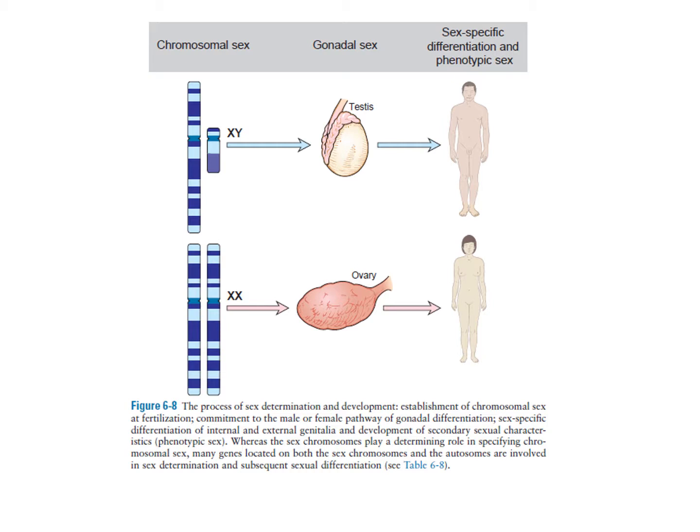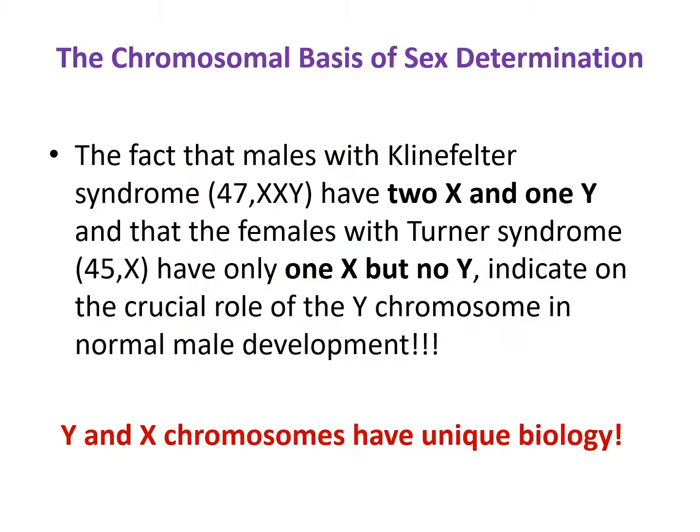There are three types of sex. There is chromosomal sex — whether an individual has XX or XY chromosomes. There is gonadal sex — whether the individual has testes or ovaries. And there is phenotypic sex — whether phenotypically the individual looks male or female. In normal conditions there should be a correlation between these three, but sometimes there may be incoordination, and then there may be sex chromosomal disorders.